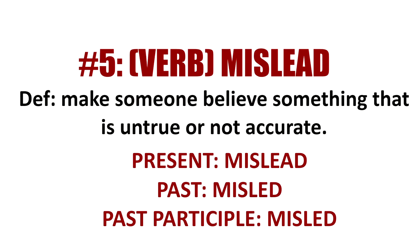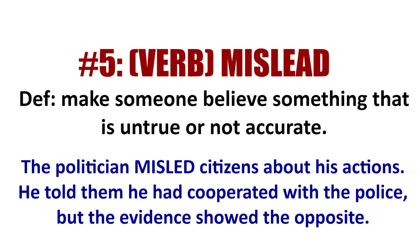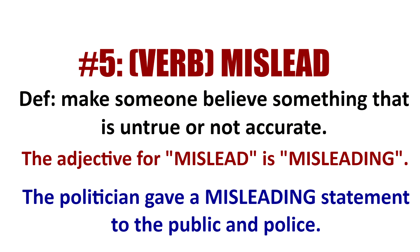The last word, number five, is mislead — to give a person the wrong idea and make them believe something that is not true. The forms are: mislead (present), misled (past), and misled (past participle). For example, the travel agency misled customers when it said all meals were included in the tour, but only dinner was included. Or: the politician misled citizens about his actions — he told them he had cooperated with the police when the evidence showed the opposite. The adjective form is misleading: the politician gave a misleading answer.